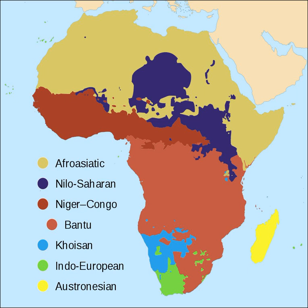The languages of Africa are divided into six major language families. Afroasiatic languages are spread throughout Western Asia, North Africa, the Horn of Africa and parts of the Sahel.